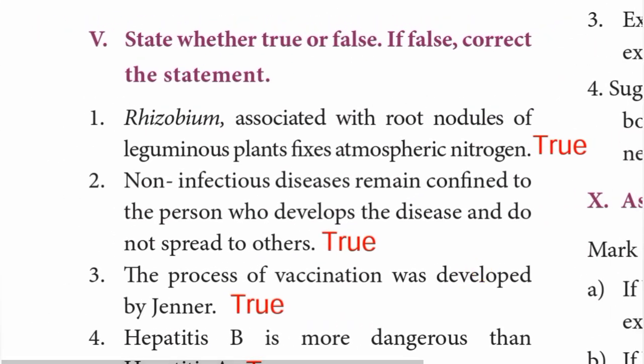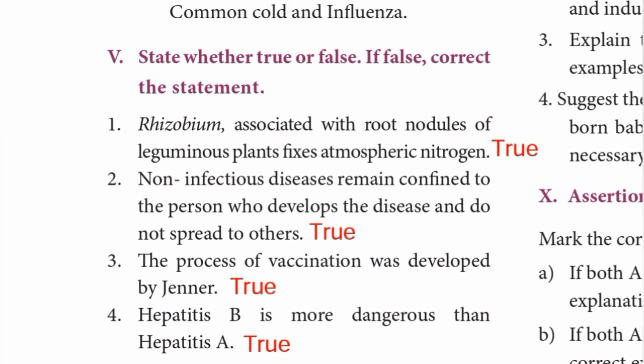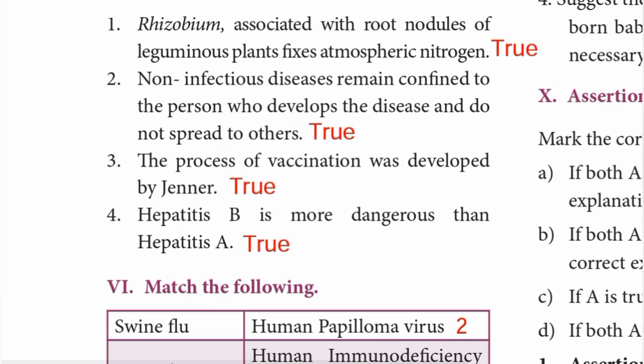Roman number five: State whether true or false. First — Rhizobium associated with root nodules of leguminous plants fixes atmospheric nitrogen. True. Second — non-infectious diseases remain confined to the person who develops them and do not spread to others. True. Third — the process of vaccination was developed by Jenner. True. Fourth — Hepatitis B is more dangerous than Hepatitis A. True.